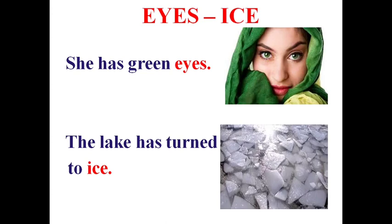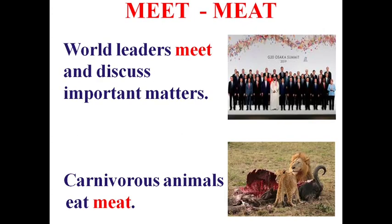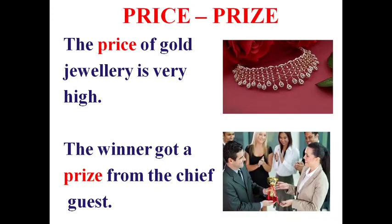Eyes and ice: 'She has green eyes'; 'The lake is turned to ice.' Meet and meat: 'World leaders meet and discuss important matters' — the act of meeting; 'Carnivorous animals eat meat' — flesh of animals.